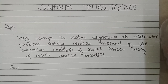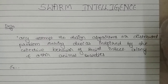So how do animal behavior and artificial intelligence come together? The definition is: in artificial intelligence, we will be designing algorithms or distributed problem-solving devices that are inspired by the behavior of social insect colonies and other animal societies.